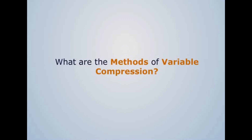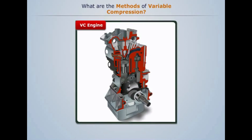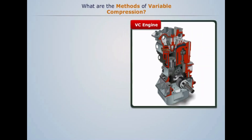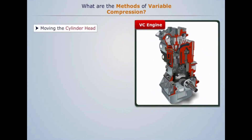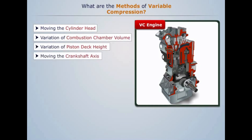What are the methods of variable compression? A variable compression engine is an engine whose compression ratio can be varied according to changes in load and efficiency requirements. There are different methods by which variable compression is achieved: moving the cylinder head, variation of combustion chamber volume, variation of piston deck height, moving the crankshaft axis, and con-rod linkages. Let us discuss them one by one.